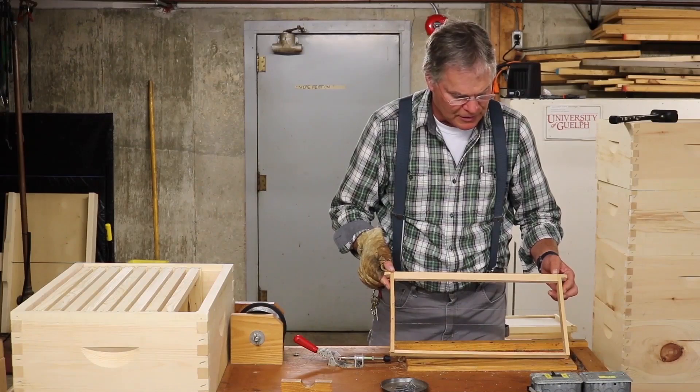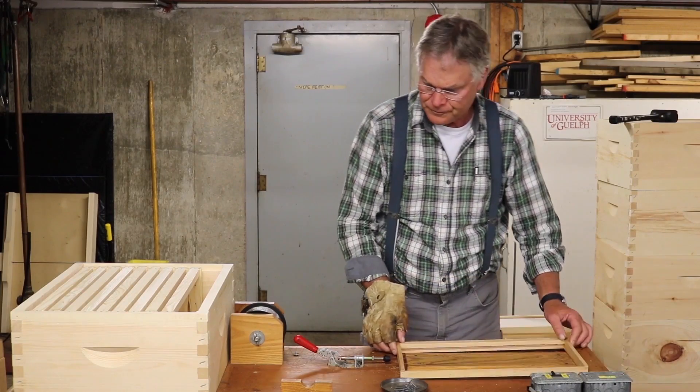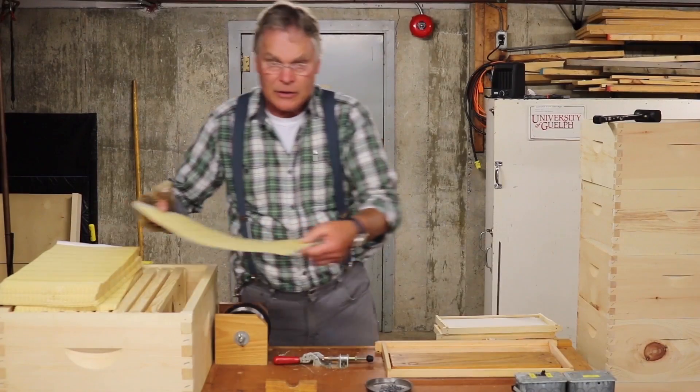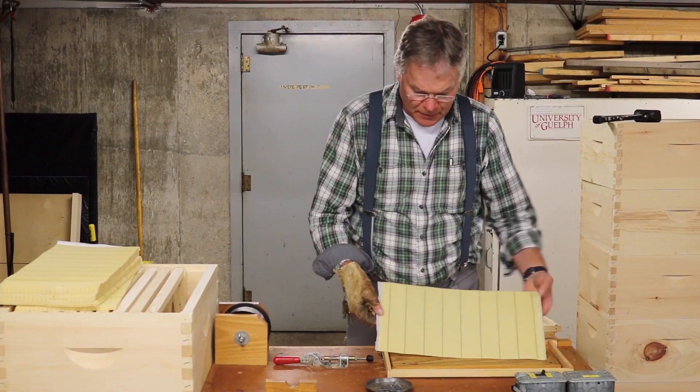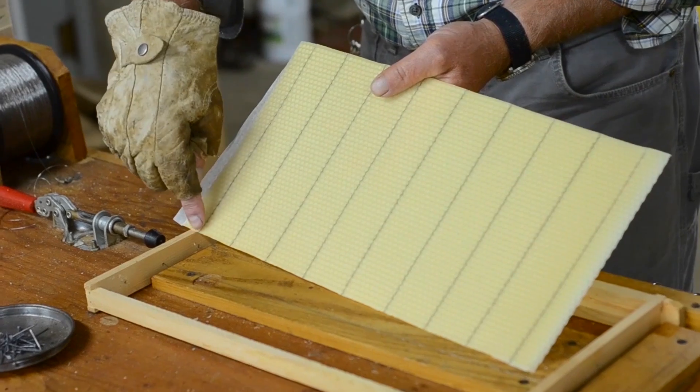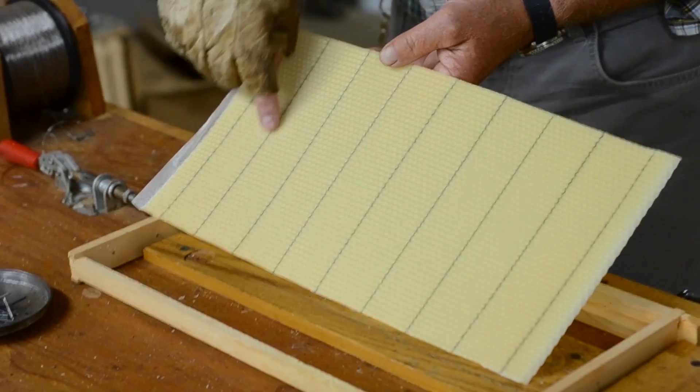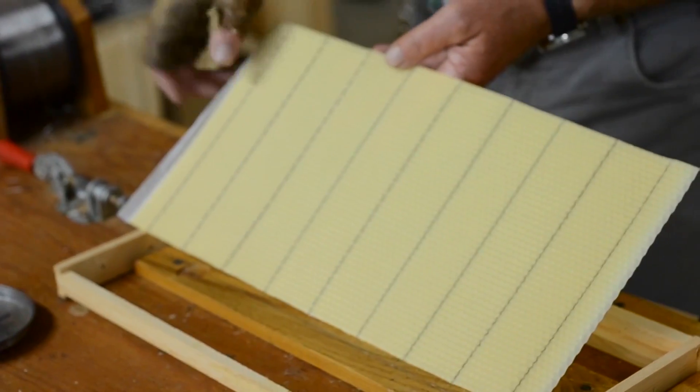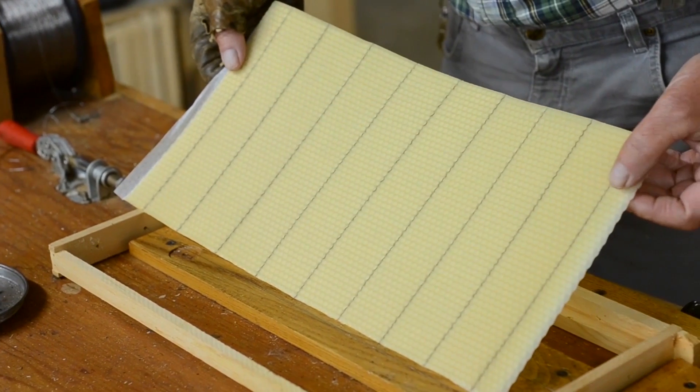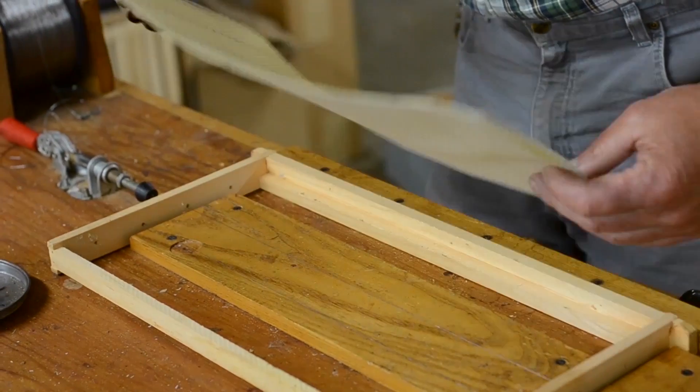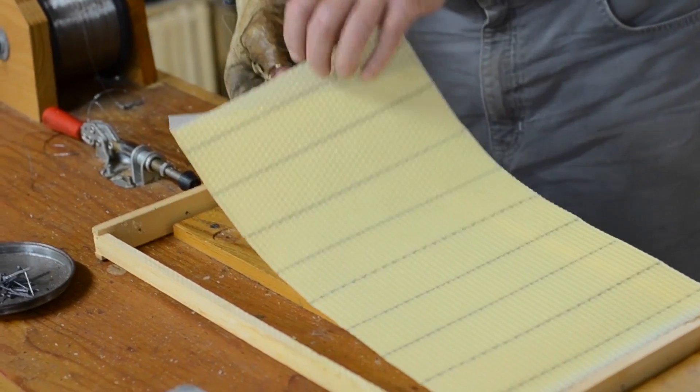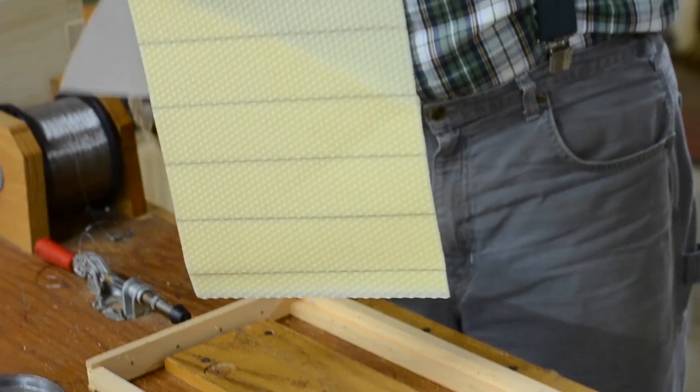So we take our sheet of beeswax. The wax has wires, crimped wires running vertically along here to help reinforce the foundation and the layers of wax are separated by sheets of paper. So remove that.